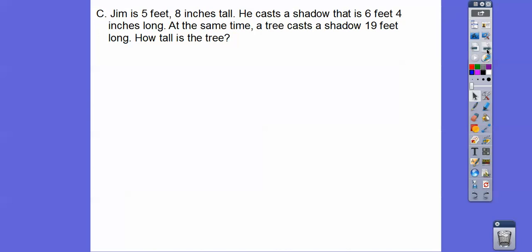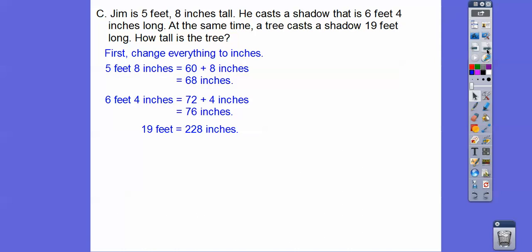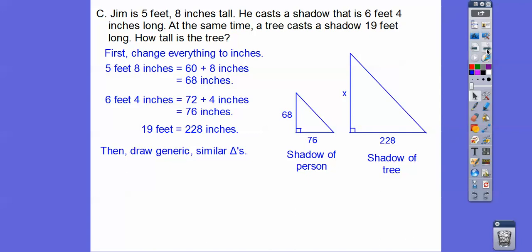So Jim is five feet, eight inches tall. He casts a shadow that is six feet, four inches long. At the same time, a tree casts a shadow 19 feet long. How tall is the tree? We've got to convert everything to inches. We can't have things in different units, feet and inches. And then just set up some generic triangles.